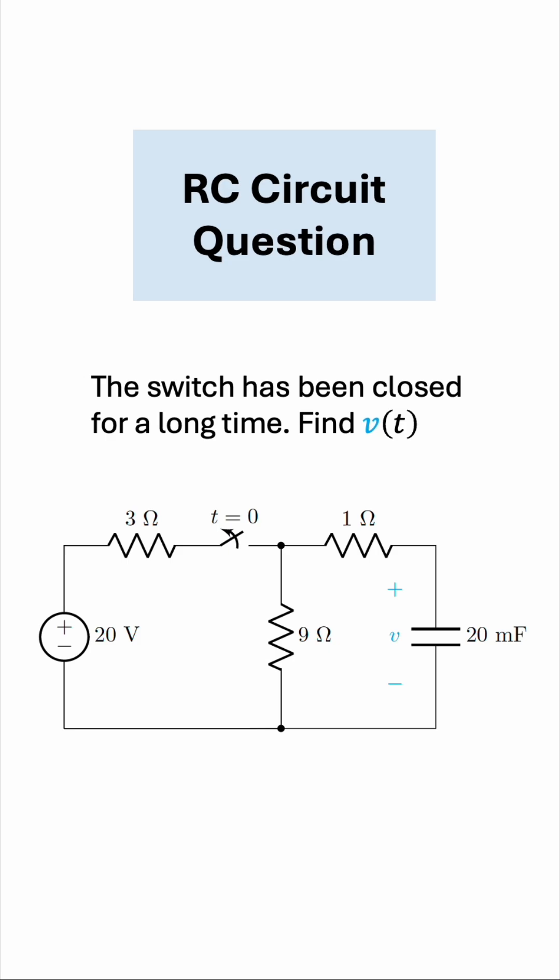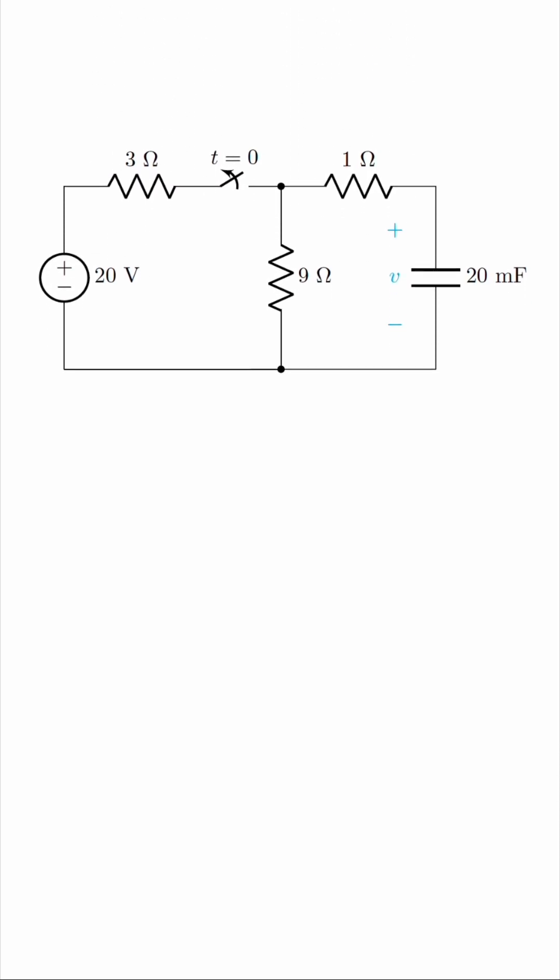In order to find the voltage as a function of time in general, we have to analyze each of these two separate stages. First of all, when the switch was closed. We have a capacitor being fed by a DC voltage source, and if you've watched my video on capacitors and inductors under DC conditions, you must know by now that a capacitor behaves as an open circuit under DC conditions.